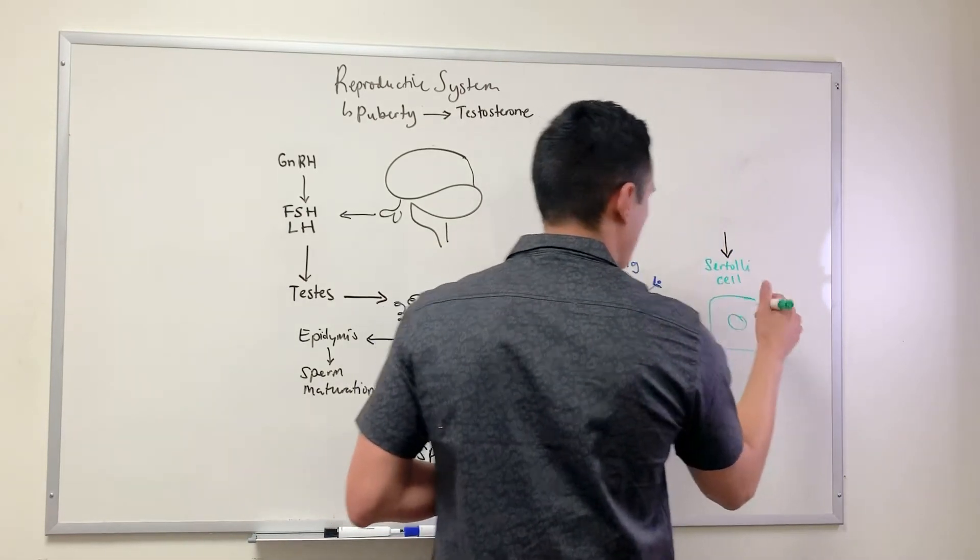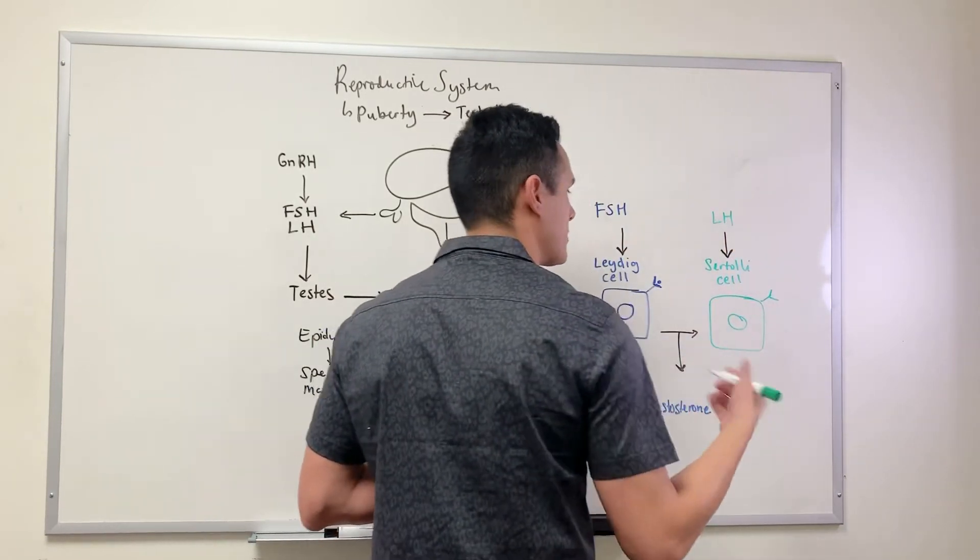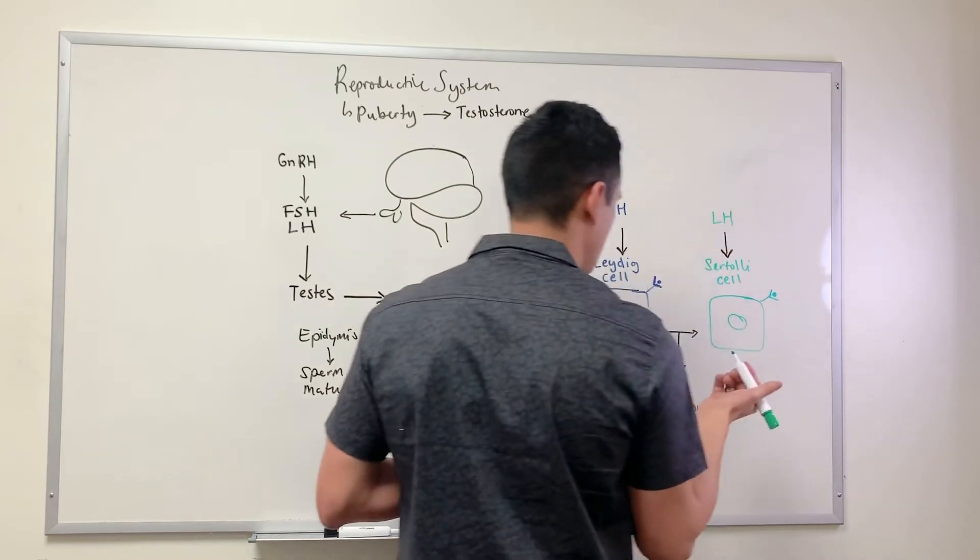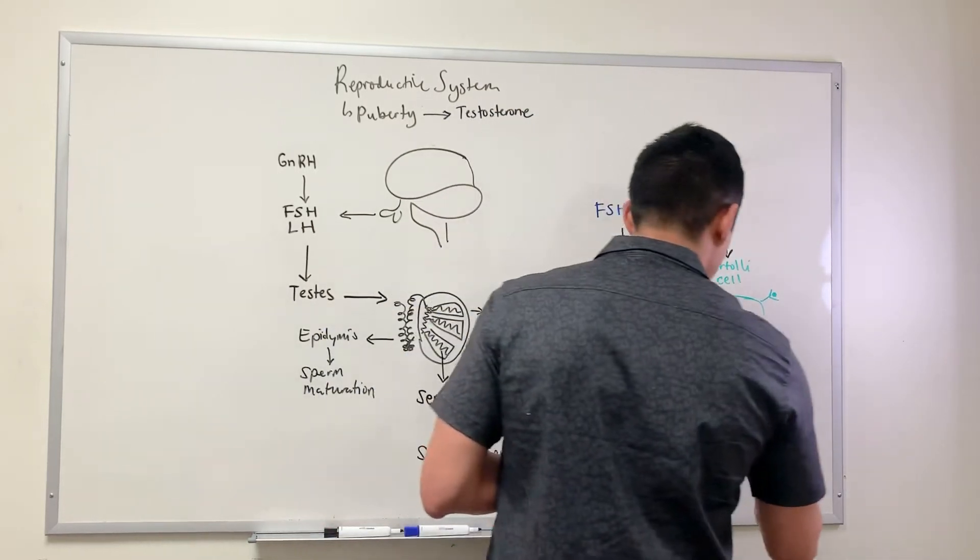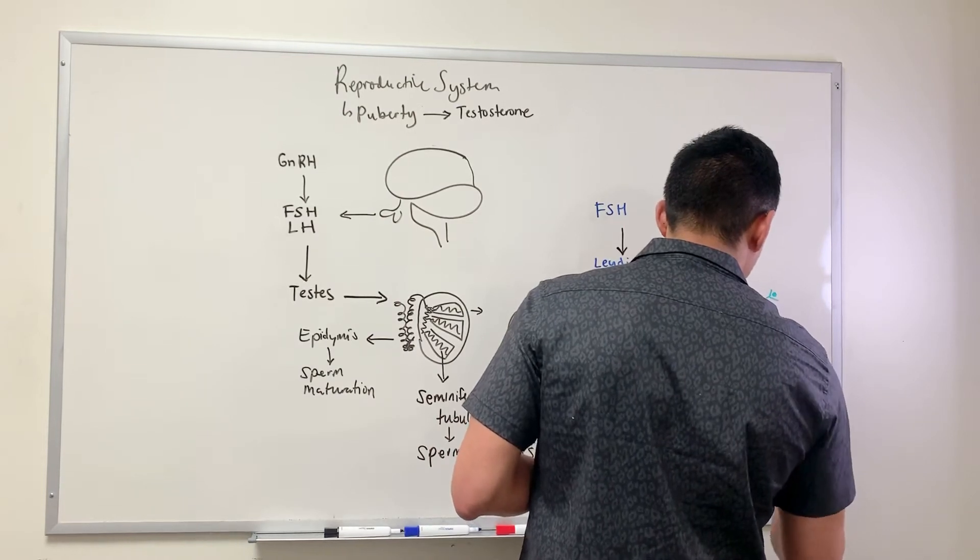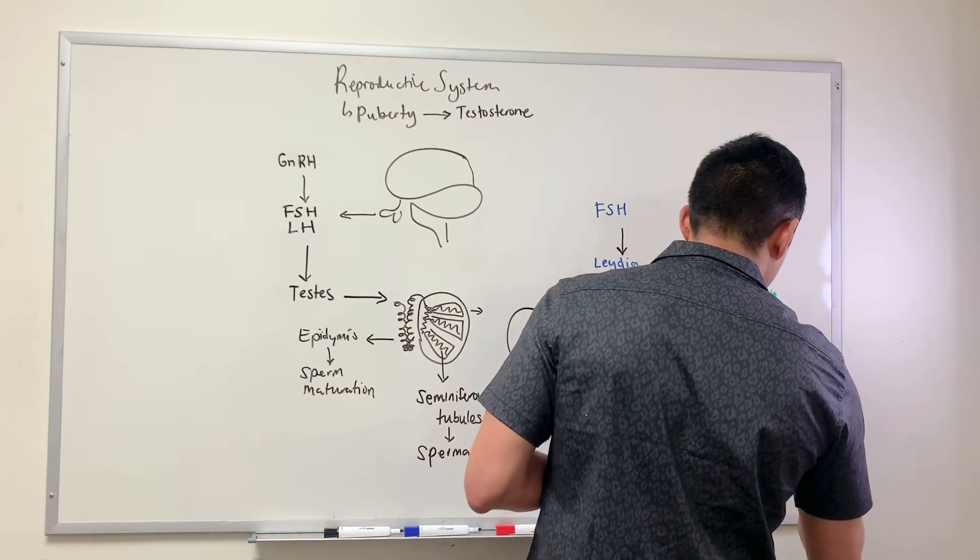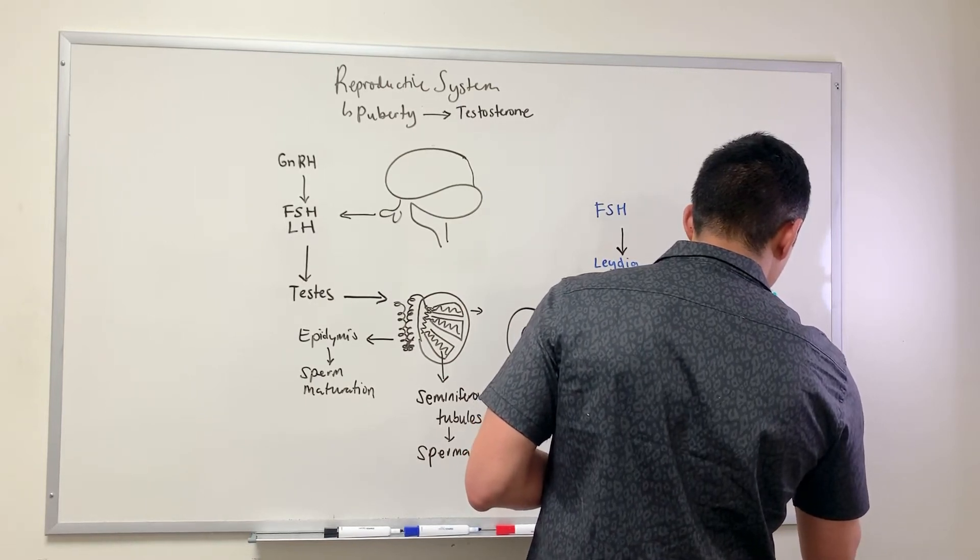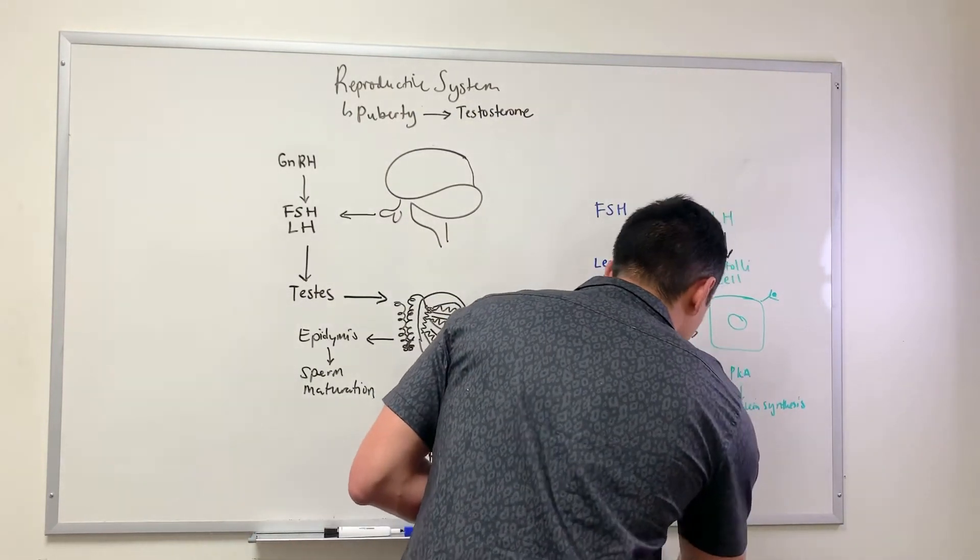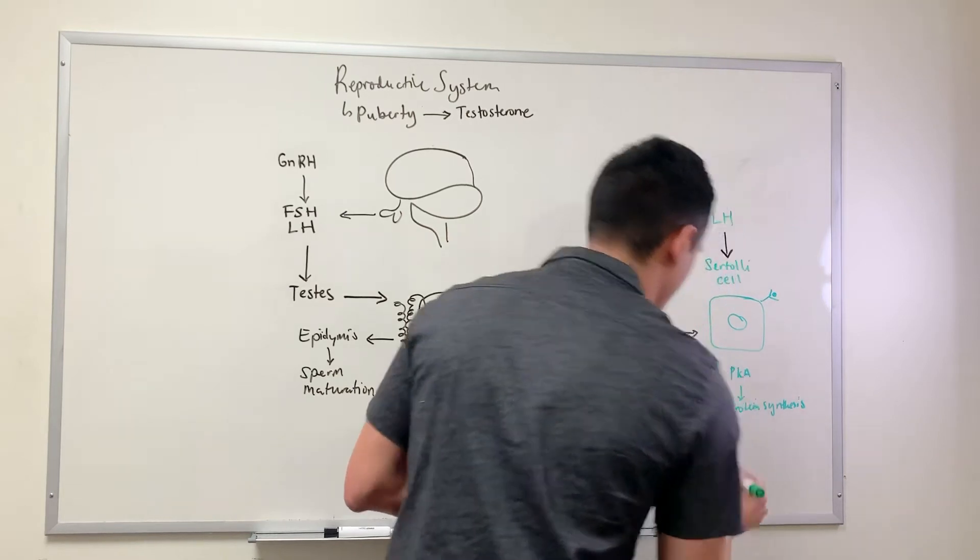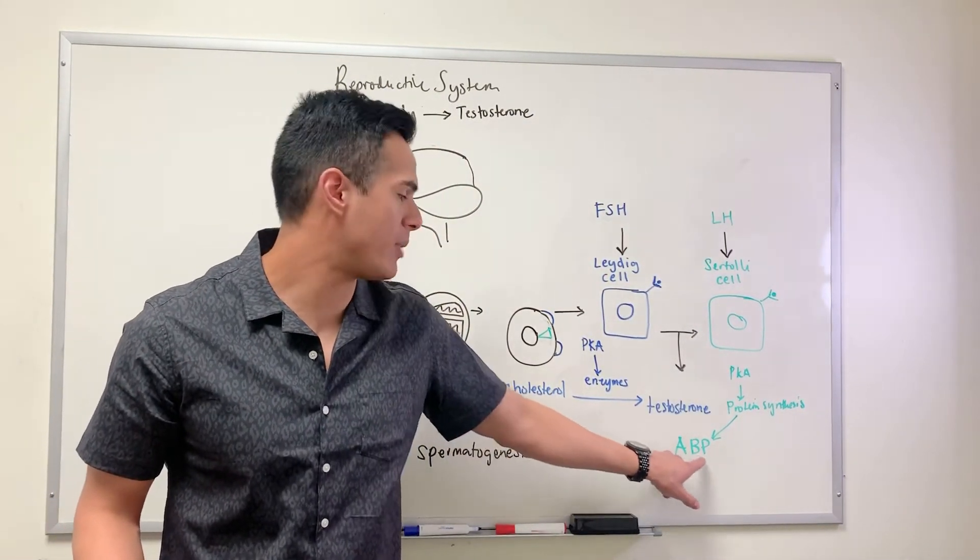The hormone that binds here to the Sertoli cell is LH. LH is also a peptide, so it binds to its receptor. We use our secondary messenger system, PKA. When we activate PKA, we undergo protein synthesis. One of the proteins we synthesize is ABP - androgen binding protein.